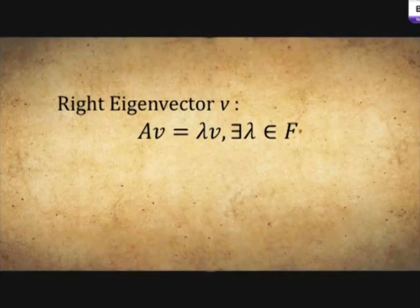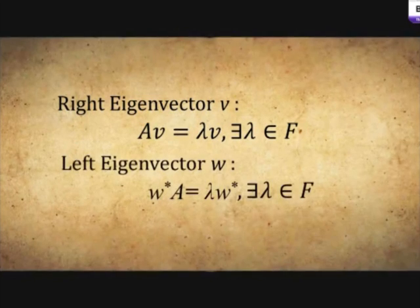The right eigenvector is defined as this, while the left eigenvector is defined as following. The right eigenvector is familiar to us, but how to understand left eigenvector?